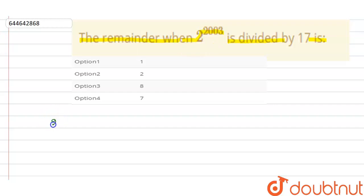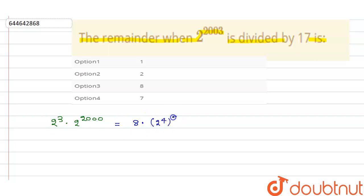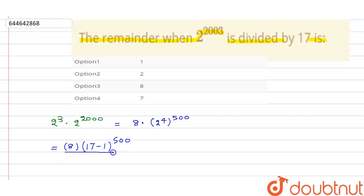2 to the power 2003 can be written as 2 to the power 3, multiplied by 2 to the power 2000. Now break 2 to the power 2000 into 2 to the power 4 to the power 500. So this becomes 8 into 16 to the power 500. And 16 can be written as (17 minus 1) to the power 500, divided by 17.